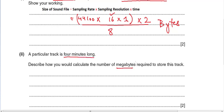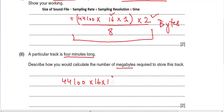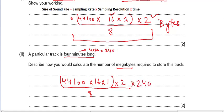The track is four minutes long and we need to calculate the file size in megabytes. For one second the size is: 44,100 × 16 × 1 ÷ 8 × 2. Four minutes equals 240 seconds, so we multiply by 240 to get the file size for the full track in bytes. To convert to megabytes, we divide by 1024 to get kilobytes, then divide by 1024 again to get megabytes.